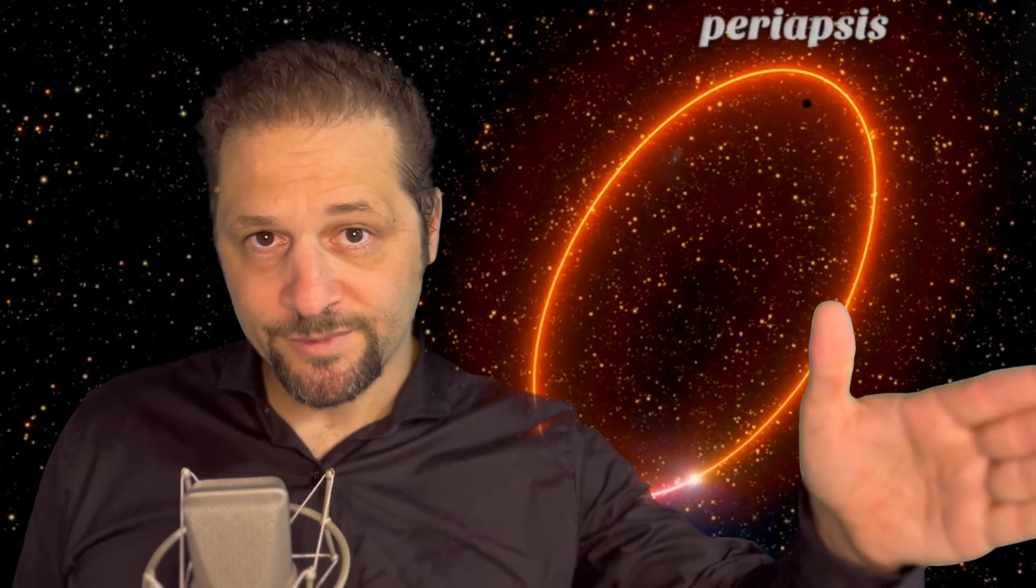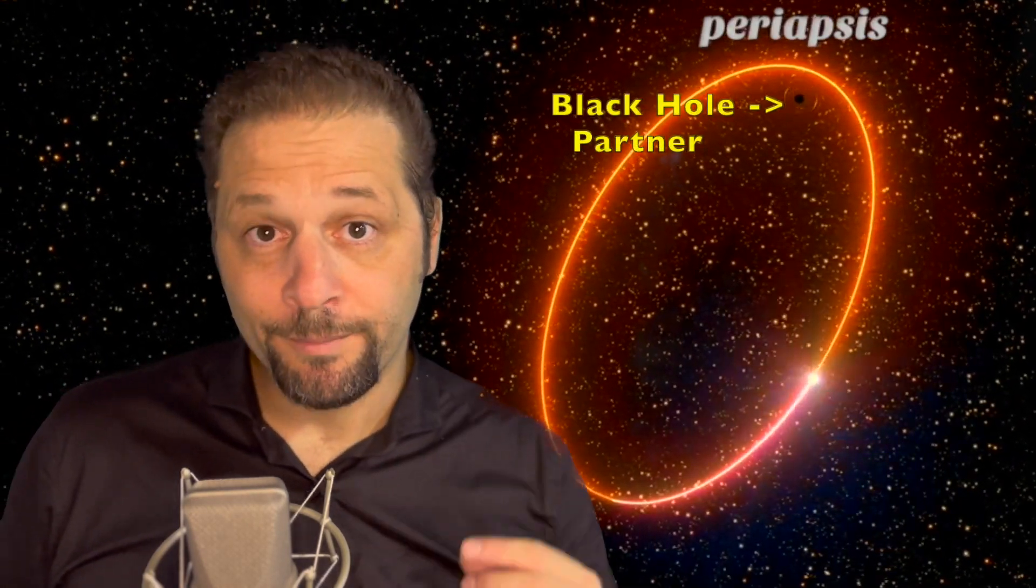So let's get back to the Matthew Hypothesis. It states that the cause of dark matter and dark energy combined are the result of our solar system heading towards periapsis, in a highly elliptical orbit with a black hole partner.